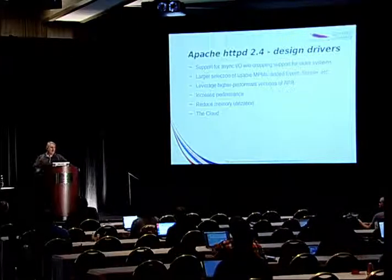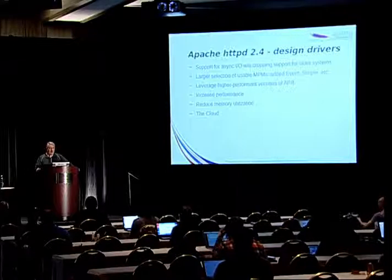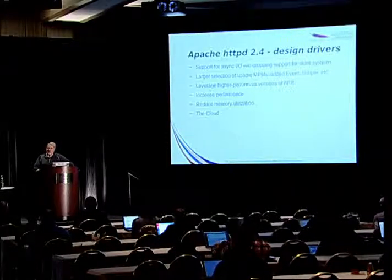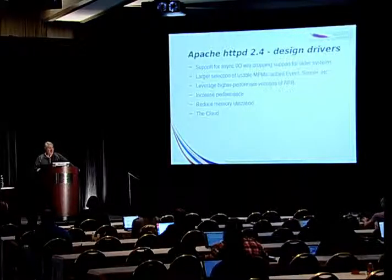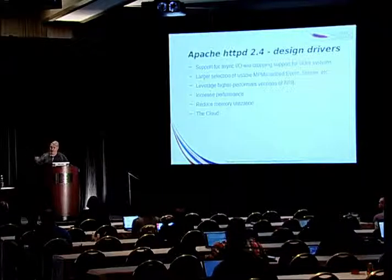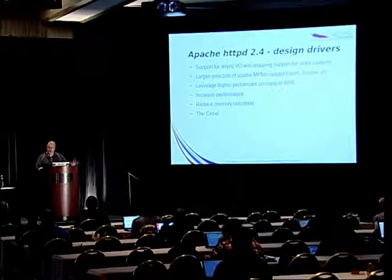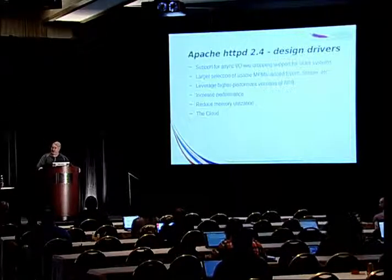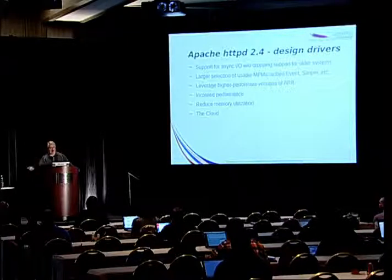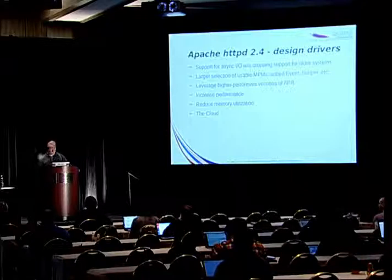Some of the major design drivers when thinking about Apache 2.4 include support for asynchronous I/O without dropping support for older systems and older modules — not breaking backwards compatibility as much as possible, while still ensuring as much asynchronous I/O as possible. We also wanted to increase the number of multiprocessing modules — these are the actual architectures that tell Apache how to grow and scale, how to respond to new requests. We added the event MPM, which was introduced in 2.2 but was considered experimental. We also wanted to leverage higher performance versions of APR, the Apache Portable Runtime — sort of like the POSIX layer between Apache and the underlying operating system. APR is also in Subversion, for example. It's just a nice way of having a unified programming interface for the underlying operating system.